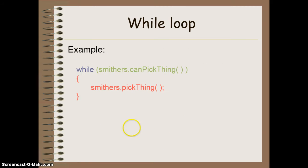An example would look something like this. If I wanted code that would allow my robot to pick up however many things are on the intersection that it's on, I can use this, while Smithers can pick something up, which basically returns true if there's a thing on the same intersection as your robot. While that's true, I'm going to pick something up.